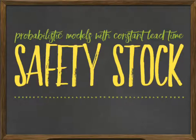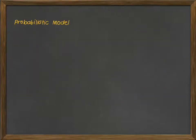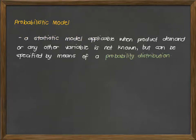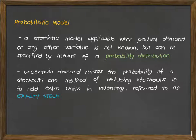Hi guys! Today's discussion is about inventory management system, specifically about safety stock with probabilistic models with constant lead time. A probabilistic model is a statistical model applicable when product demand or any other variable is not known but can be specified by means of a probability distribution. Uncertain demand raises the probability of a stock out, and one method of reducing stock outs is to hold extra units in inventory, referred to as safety stock.